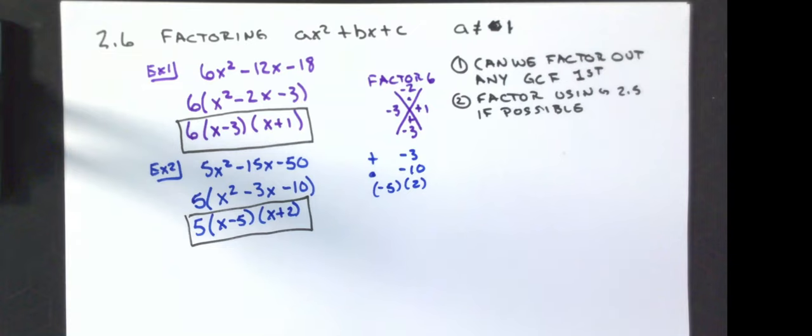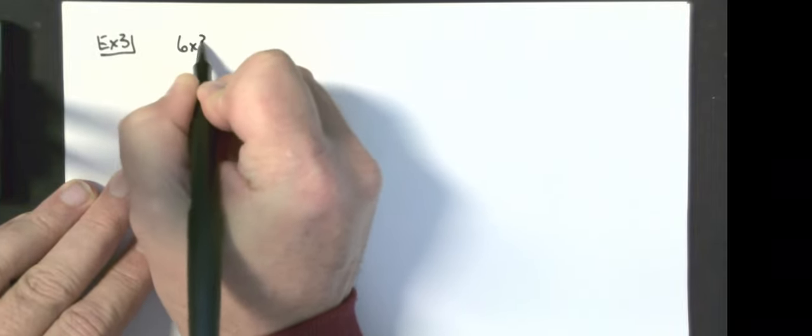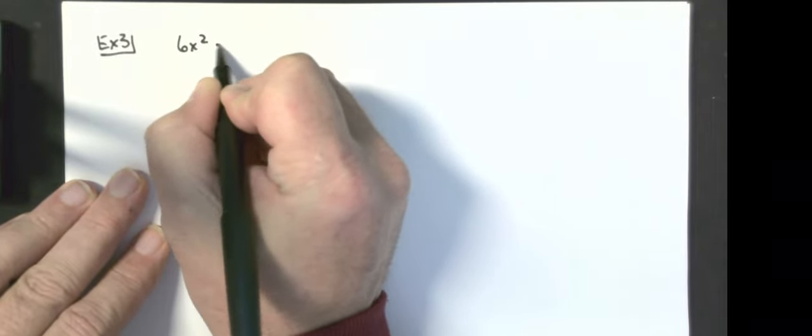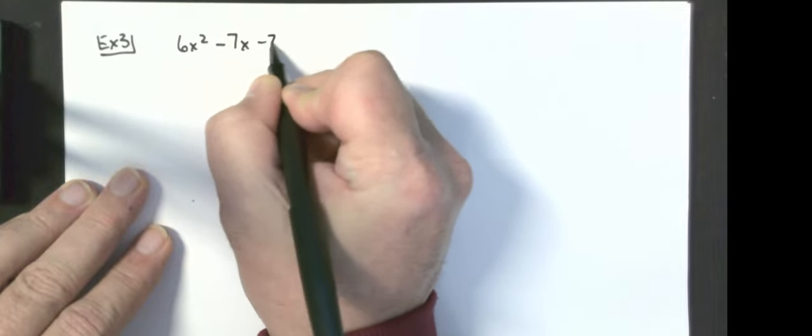Again, the first thing you look at is: can I pull out a greatest common factor? If I cannot pull out a greatest common factor, we're going to have to write down the example differently. For instance: 6x squared minus 7x minus 20.